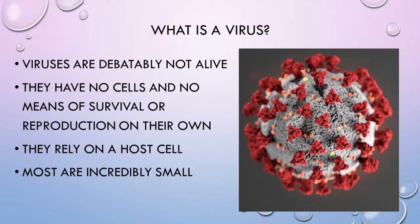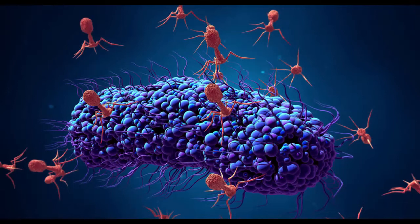Every other animal, plant, fungus, bacteria — you name it — that we call life has cells and also has some sort of metabolism, meaning it eats food or makes its own food, it breaks down food for energy. Everything also reproduces, making copies of itself. Viruses don't have cells. They rely on other cells to reproduce, so they're kind of like parasites — they take over cells and use them to make more viruses, and because of that they don't directly do any metabolism. They do not eat food directly or do anything with energy directly; they only take over other cells.